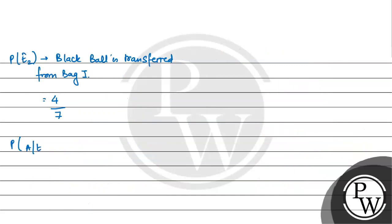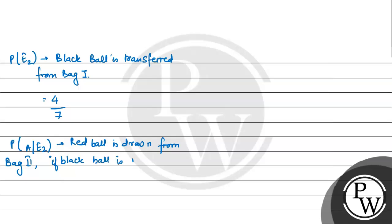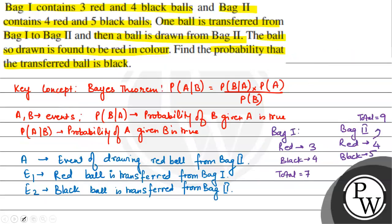Now the probability of A given E1: if a red ball is transferred from Bag 1 to Bag 2, Bag 2 originally has 4 red balls, and now gains 1 more red ball, making it 5 red balls out of a total of 10 balls — so probability of A given E1 is 5 by 10 which is 1 by 2. For probability of A given E2: if a black ball is transferred, Bag 2 still has 4 red balls out of a total of 10 balls, giving 4 by 10 which equals 2 by 5.